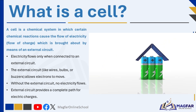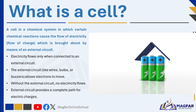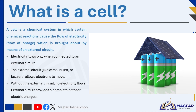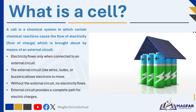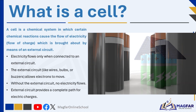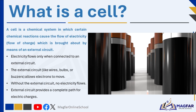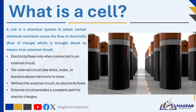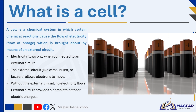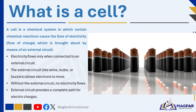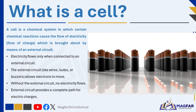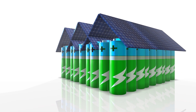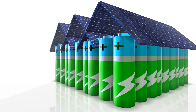An electrical cell usually contains two solid pieces called electrodes, made from different materials, placed in a solution called an electrolyte. Because the electrodes are made of different metals, one becomes the positive terminal and the other becomes the negative terminal. These terminals allow electric current to enter or leave the cell. The electrolyte is a liquid or paste that conducts electricity and contains tiny charged particles called ions. When the electrodes are connected through a circuit, a chemical reaction starts inside the cell, causing electrons to move and creating a flow of electrical charge through the external circuit, which we use to power things like remote controls, calculators, and torches.